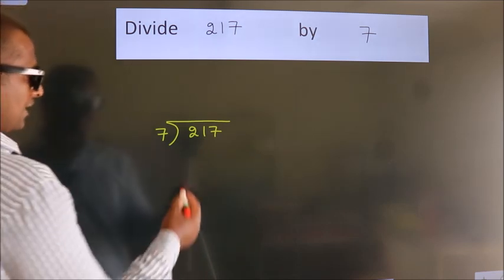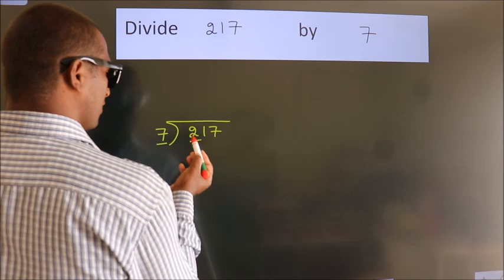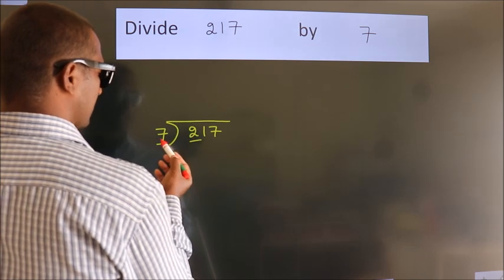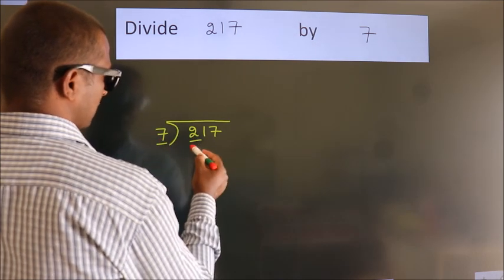Next. Here we have 2. Here 7. 2 is smaller than 7, so we should take 2 numbers. 21.